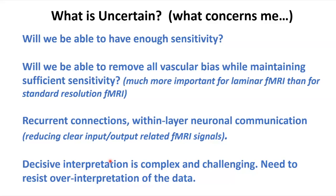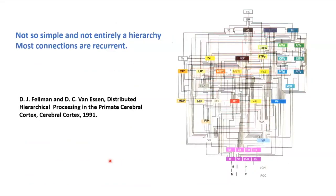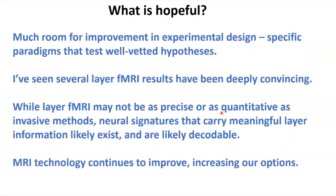There's an example of recurrent connections that looks intimidating, but I think we can actually build models like this with layer fMRI. What's hopeful: there's so much room for improvement in experimental design. Our experiments are currently kind of crude — we might get a salt-and-pepper pattern that's hard to interpret. With better experimental design and better processing methods, I think we'll make a lot of progress.